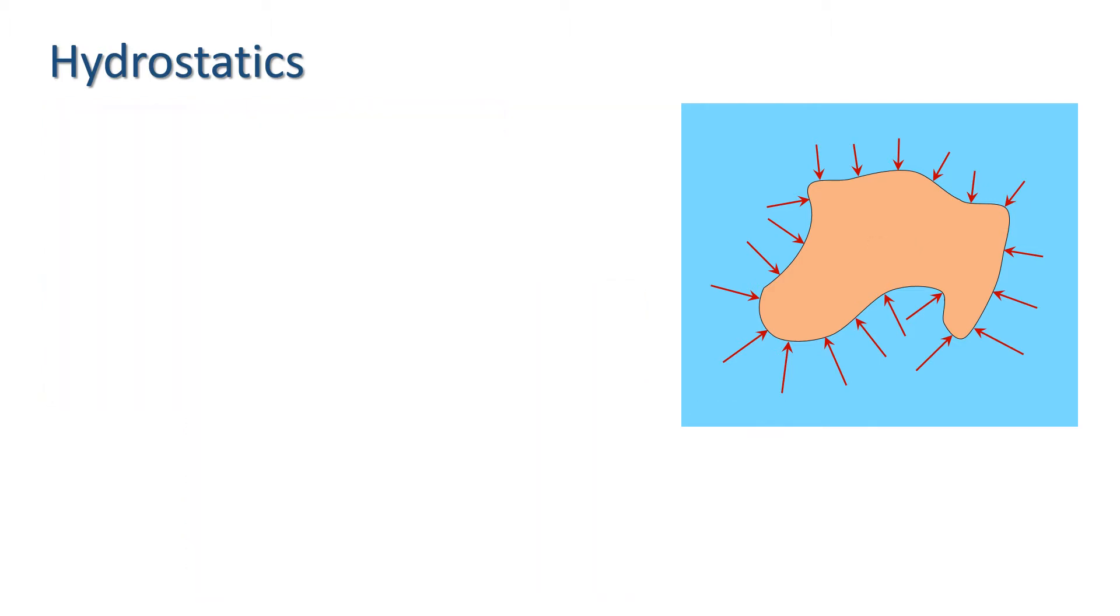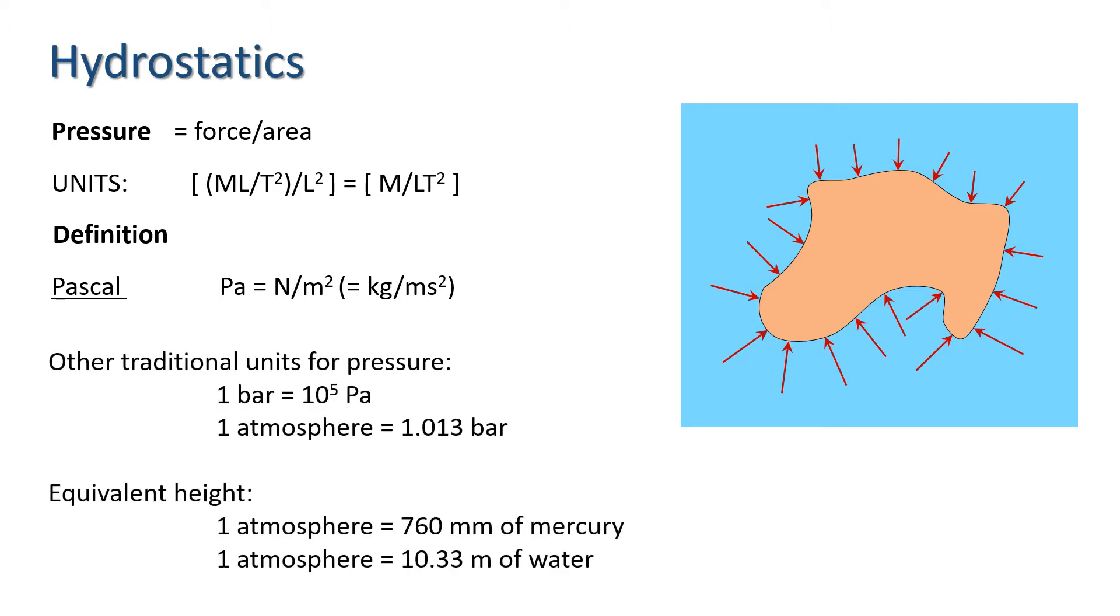Before we derive the fundamental equation of hydrostatics, we need a couple of definitions. First, we have the notion of pressure, which is defined as force per unit area. The SI unit for pressure is the pascal, where 1 pascal equals 1 newton per meter squared. Two other units are routinely used for pressure, the bar and the atmosphere. One bar is 10 to the 5 pascals, and one atmosphere is 1.013 bar. The atmospheric pressure at sea level is equal to one atmosphere.